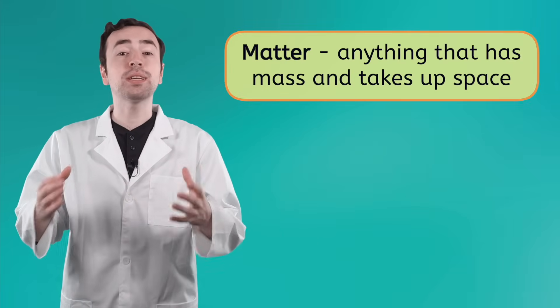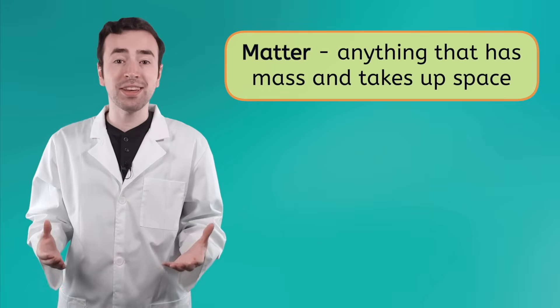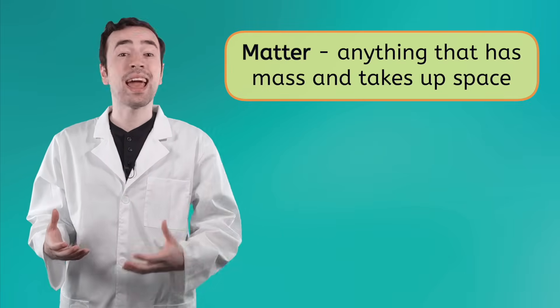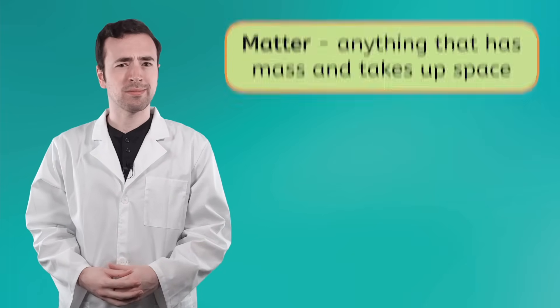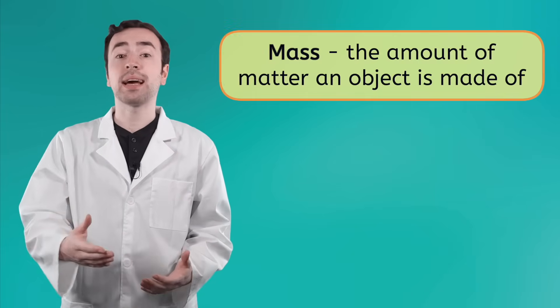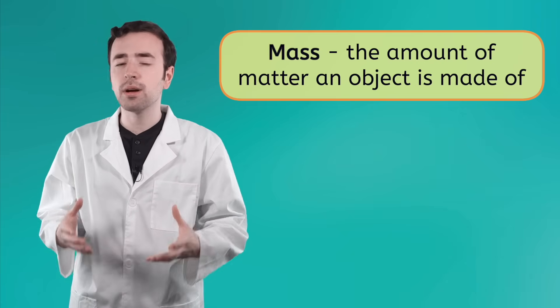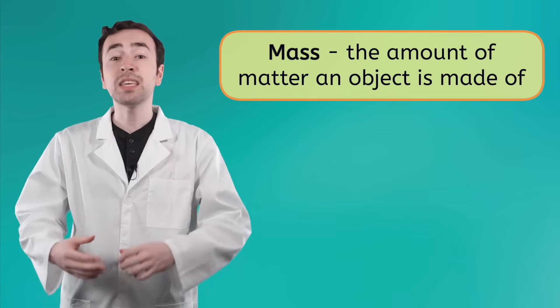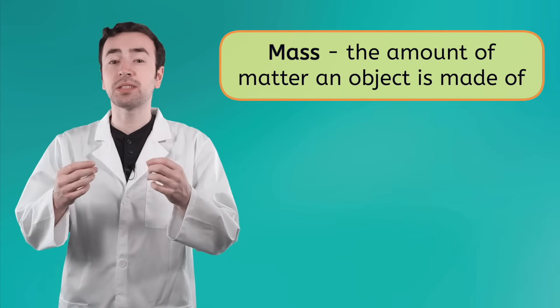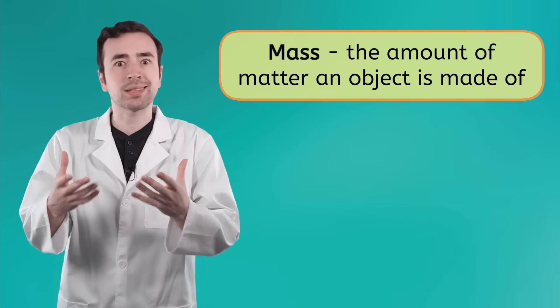So how could everything around us all be made of matter? Well, it's actually quite simple. Matter simply describes anything that has mass and takes up space. Let's break it down. Mass is the amount of matter that an object has, or more simply put, it's the amount of substance or stuff that's in something.